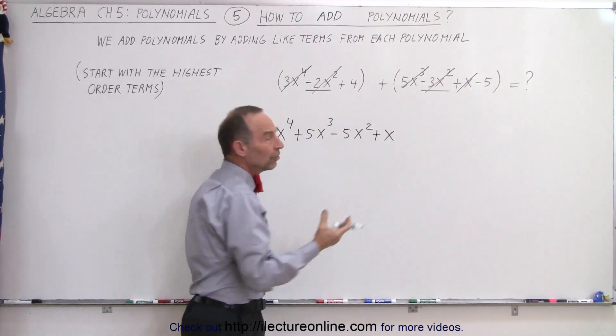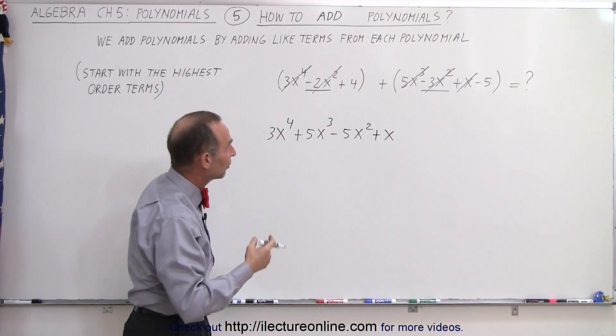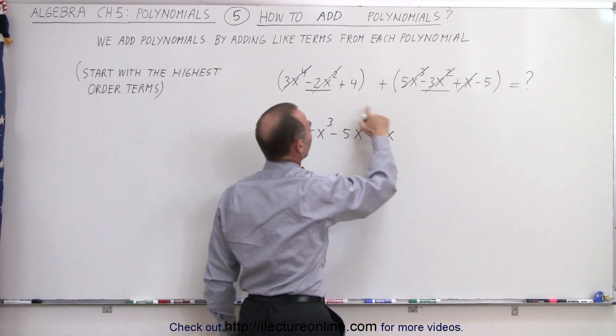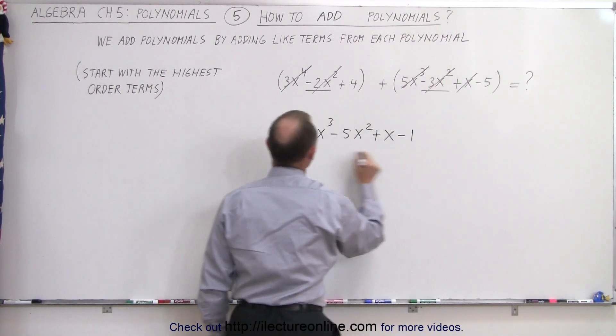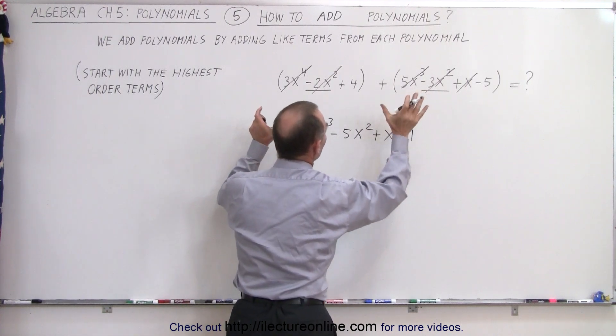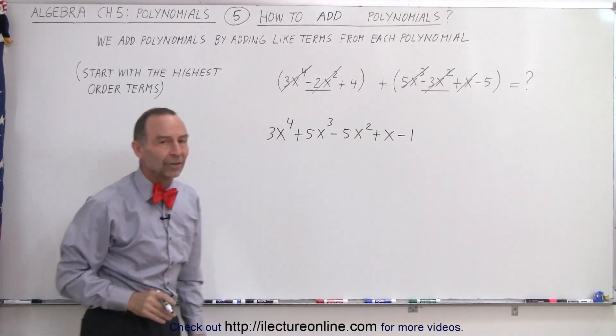And then finally, the zero order terms, and there's two of them. We have one over here, and we have one over here. So plus 4 minus 5, that becomes minus 1, and here is the two polynomials added together.